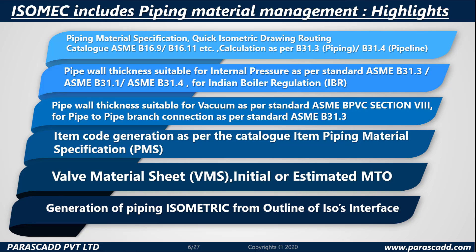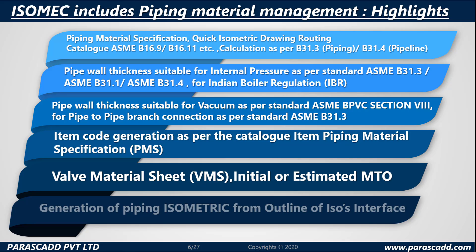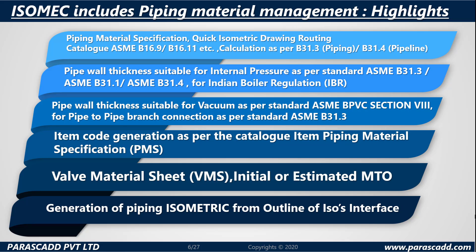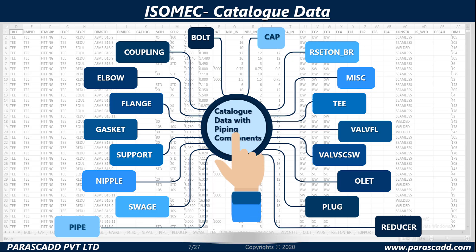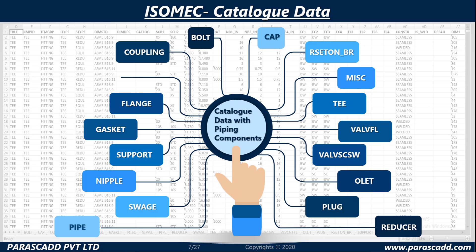Additional features include Valve Material Sheet (VMS), Initial or Estimated MTO, and generation of piping isometrics from an outline of ISO's interface.